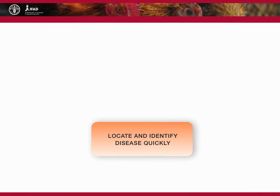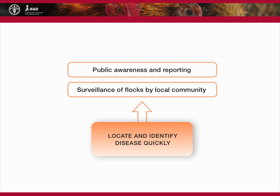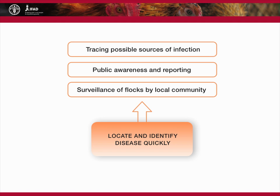Controlling diseases in a flock can be done by quickly locating and identifying disease. Surveillance of flocks by trained members of the local community is essential. Public awareness and reporting of disease symptoms is also vital. If infection is discovered, all possible sources must be traced.